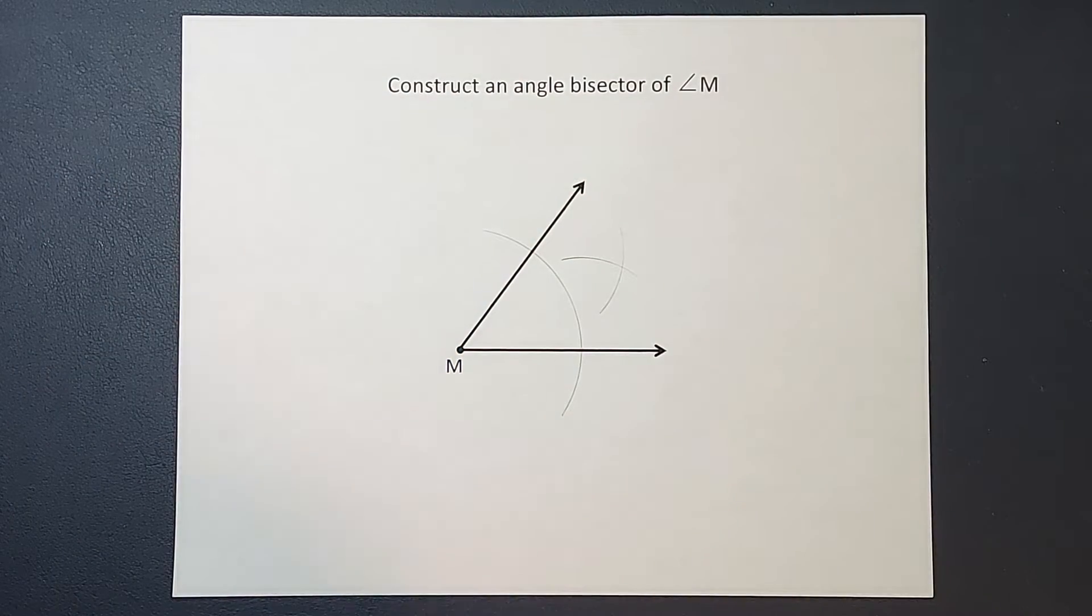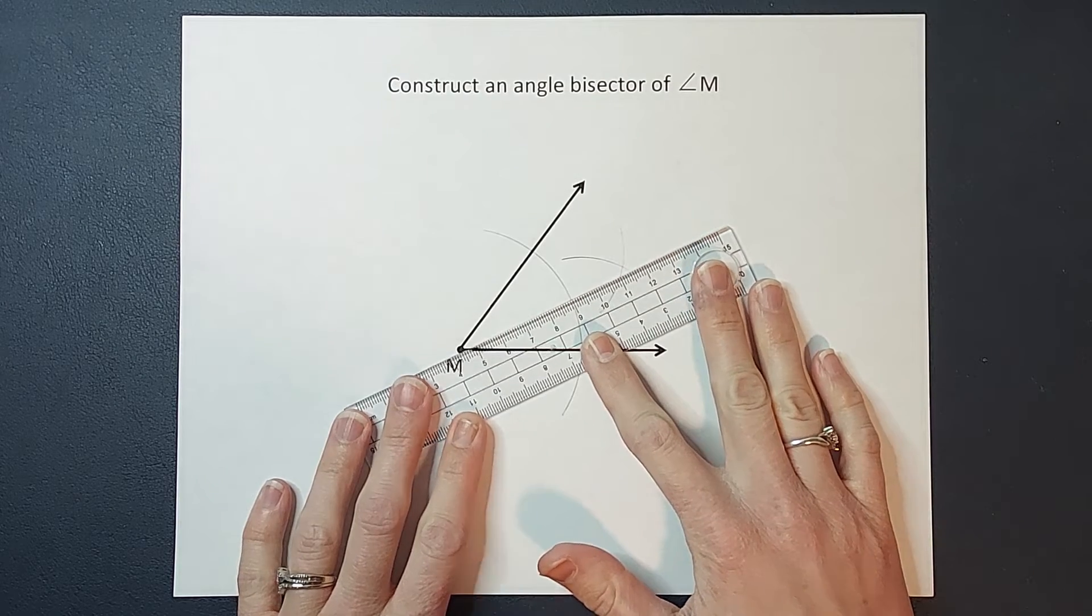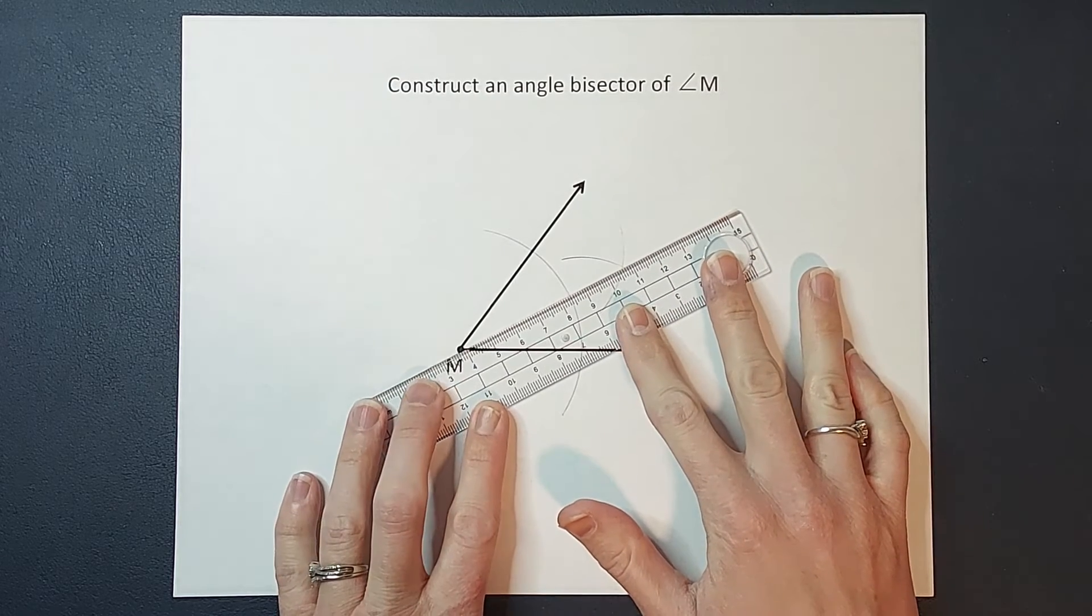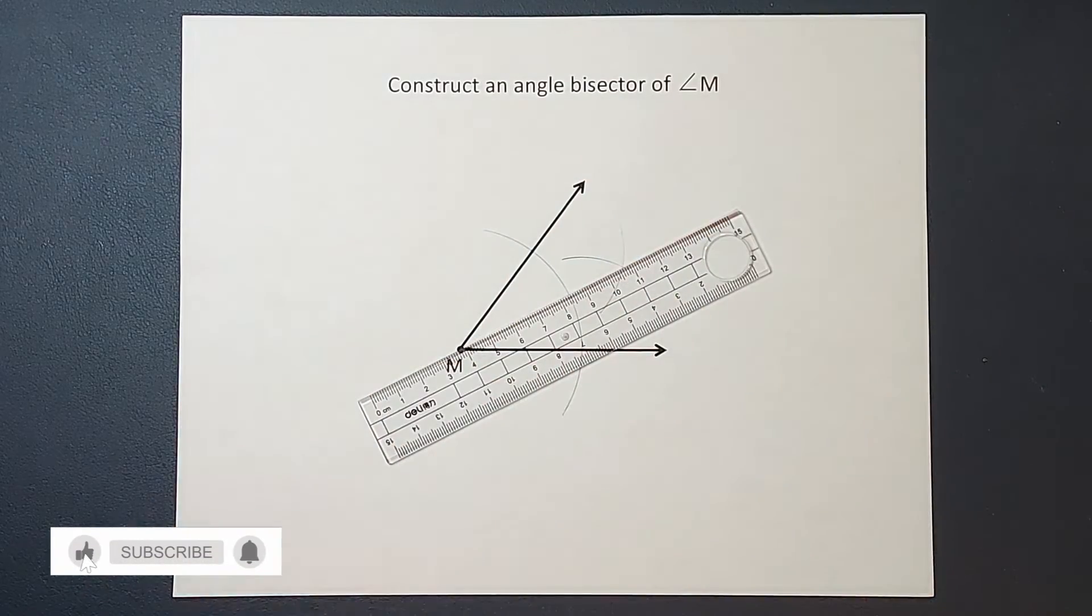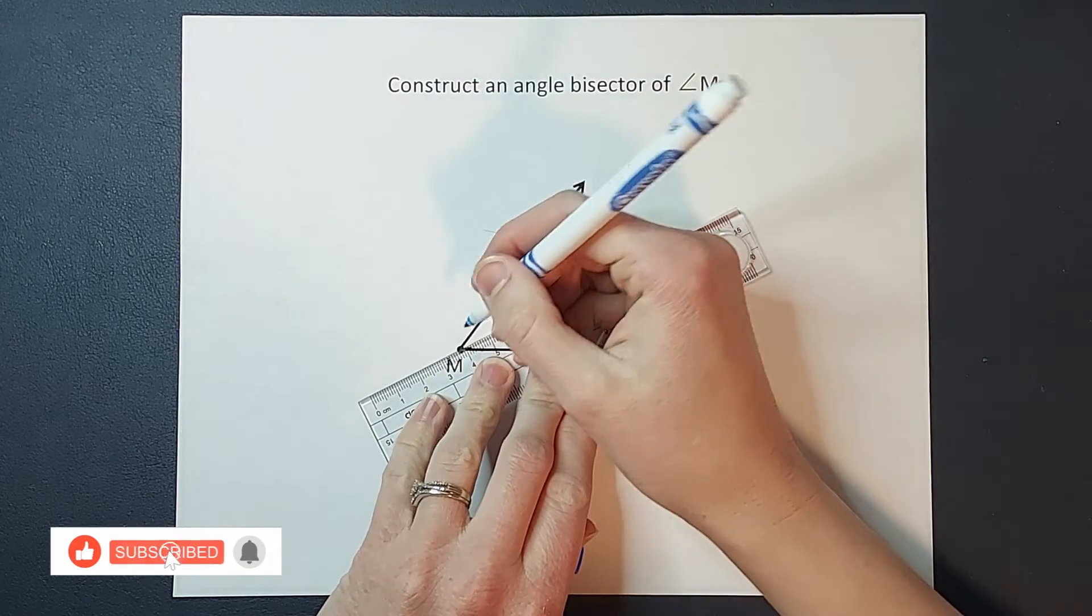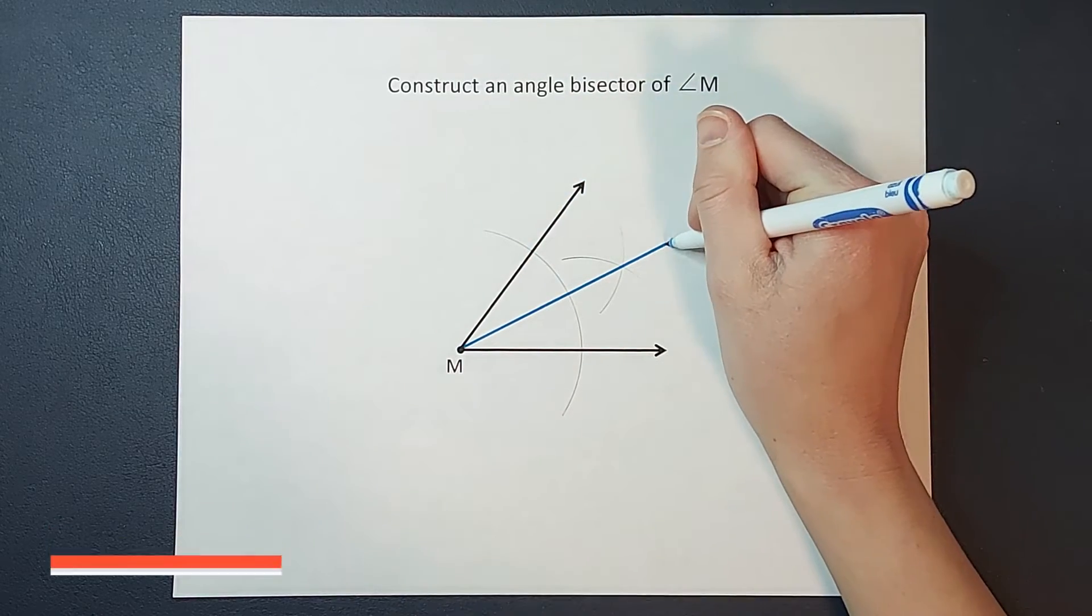Now what I'm going to do is use my straight edge, line up my point M (sorry, not N, that is an M), my point M with where these two arcs are crossed, and that is where I'm going to draw my line, or technically line segment if we want to get technical.